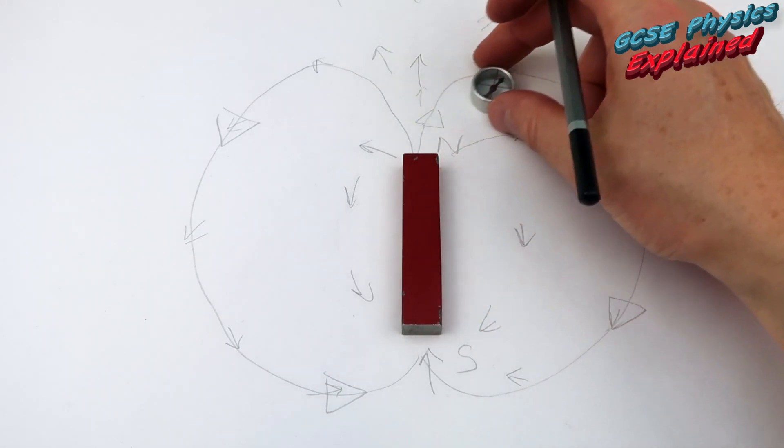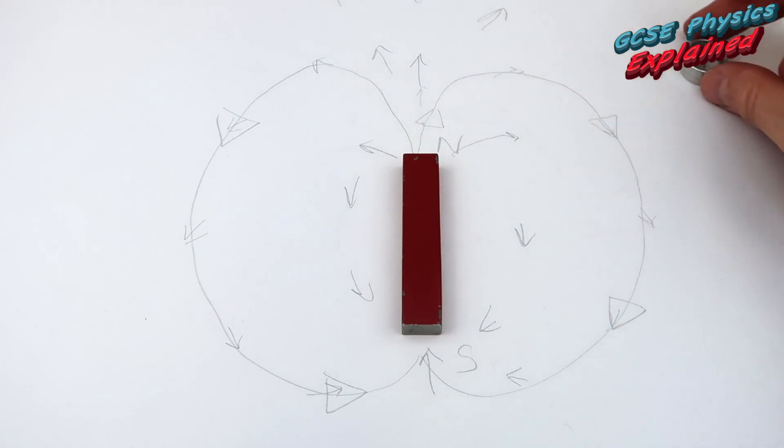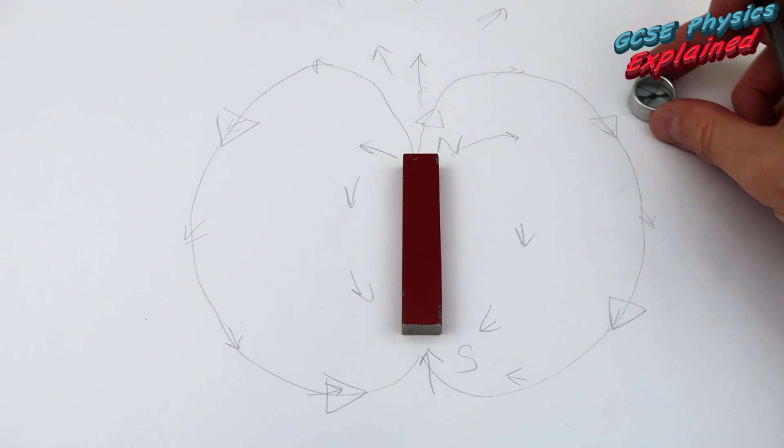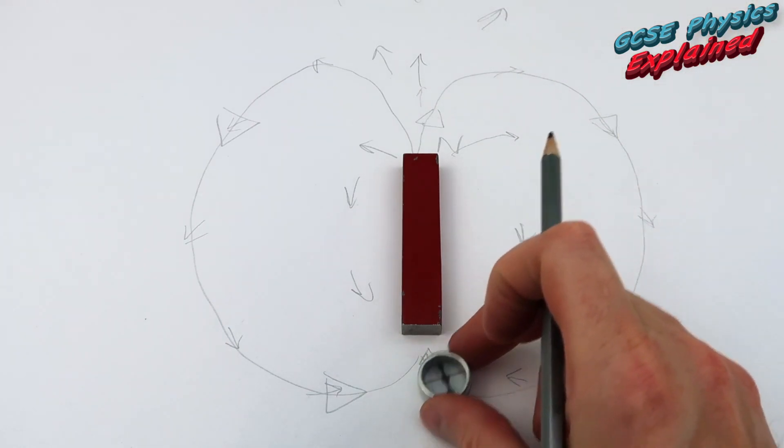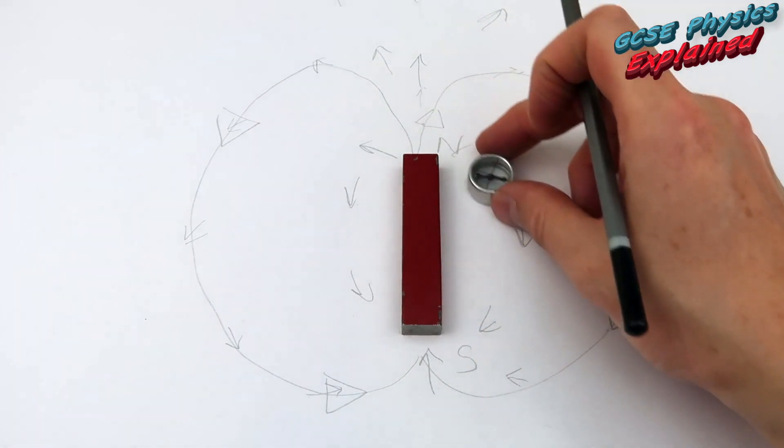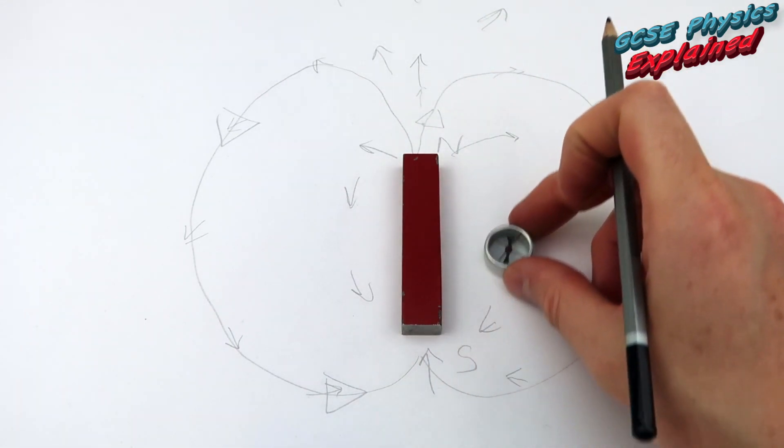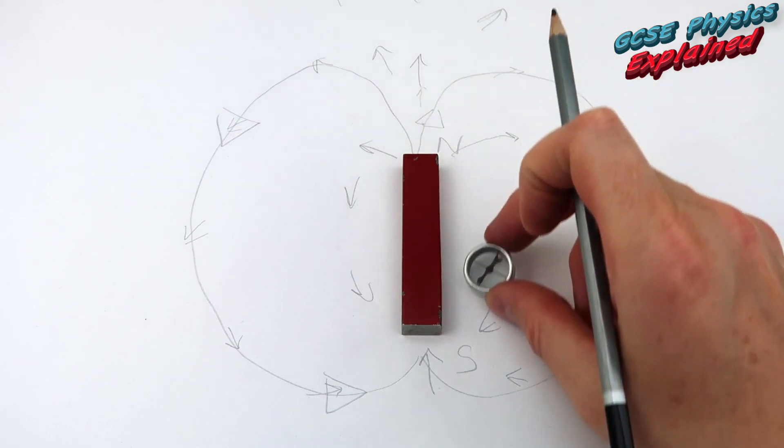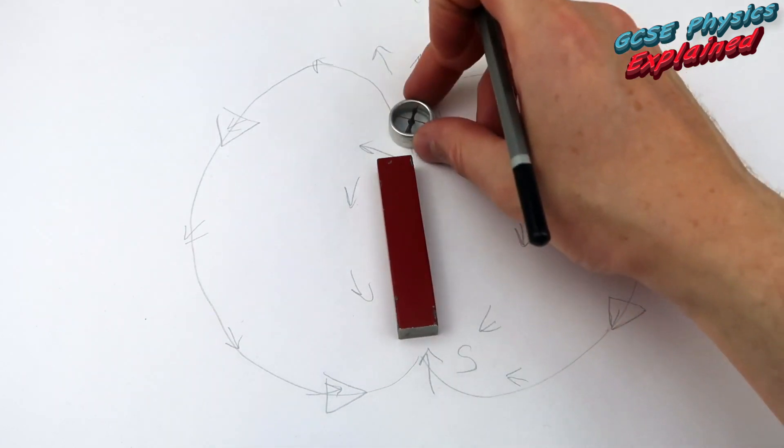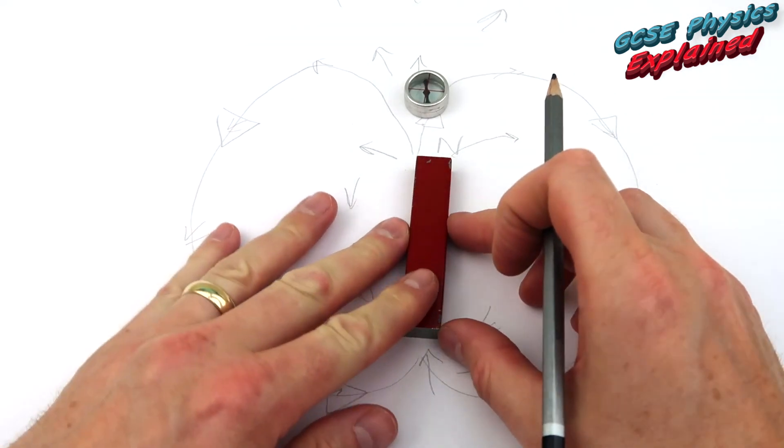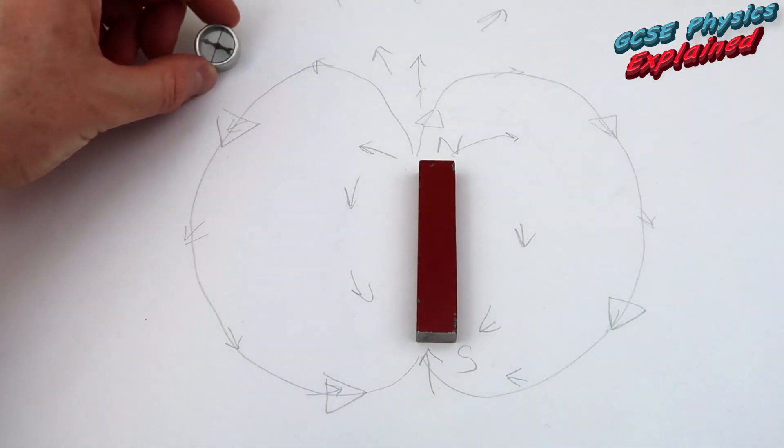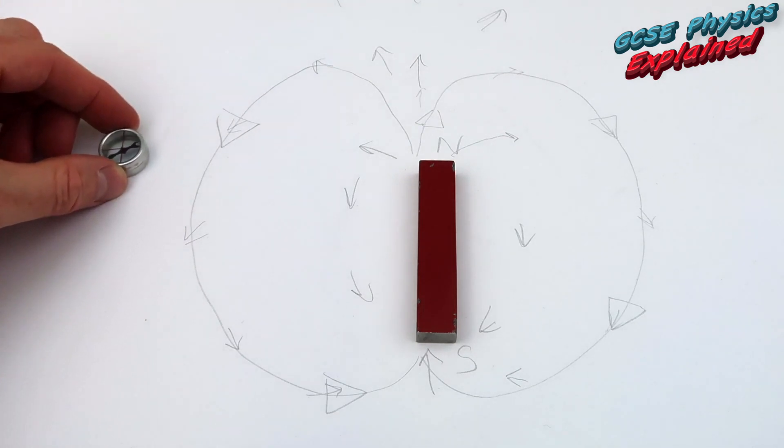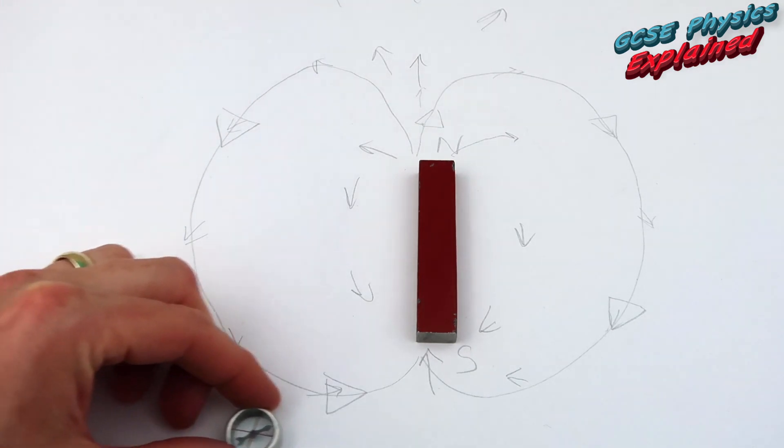Once you get further away from the magnet, the magnetic field's not as strong. So it doesn't turn as quickly. When it's close, it turns really quickly. As you get further away, it just turns slowly. You can still see it turning.